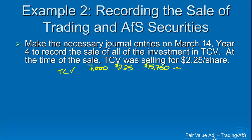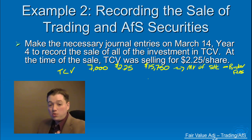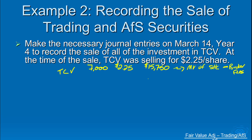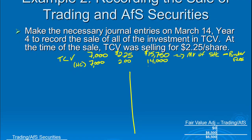When we figure out the cash we're going to get from our sale, there are usually two pieces: the actual market value of the stock, and from that we subtract brokerage fees. We're not worrying about brokerage fees here, but just be aware — take whatever cash you're getting from the securities minus what your broker takes off the top, and that's the actual cash coming in. I also need to know what I originally paid: 7,000 shares at $2 a share, so $14,000 historical cost.